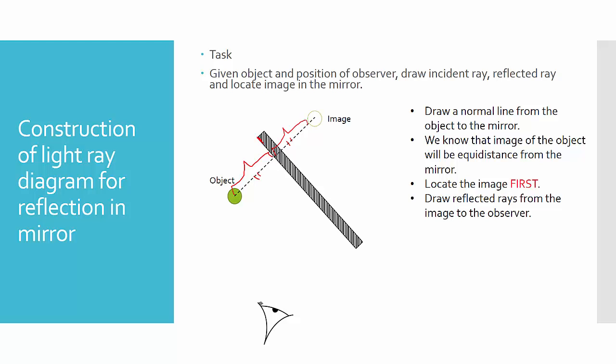Draw the reflected rays from the image to the observer. Do take note that you need to draw dotted lines over here, because this is the virtual ray — the actual ray is over here. Then, once you locate where the reflected light ray will actually intersect with the mirror, you can draw the incident ray. This is how you complete and draw the incident ray, the reflected ray, and locate the image in the mirror.